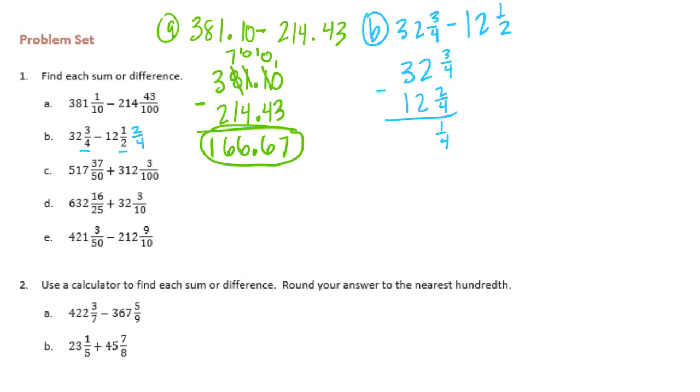But 1 fourth I need to make it out of a hundred or out of 10. I can't, nothing times 4 equals 10, so I'm going to do 1 fourth into hundredths. Times 25 times 25 we get 25 hundredths. So it's 20 and 25 hundredths.